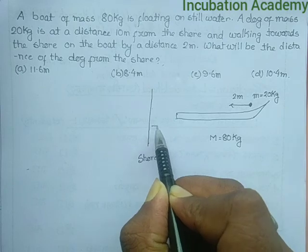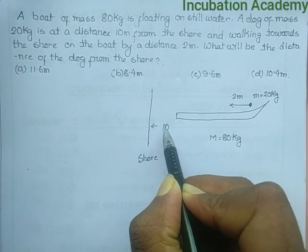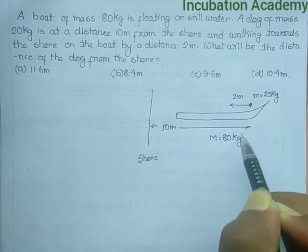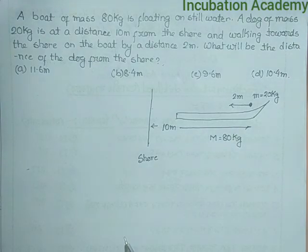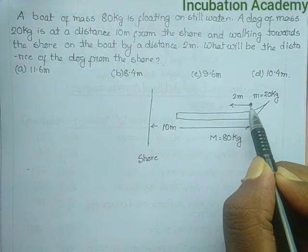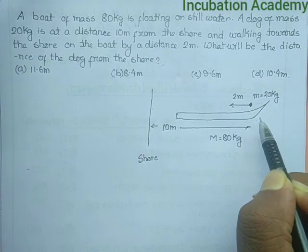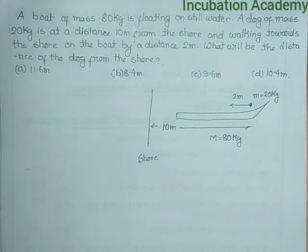The dog is initially at a distance 10 meters from the shore. So we know that if the dog is moving towards the shore, then the boat will be moving away from the shore to make the center of mass stay at its position.